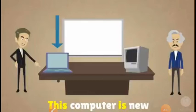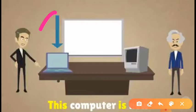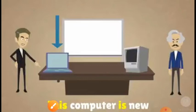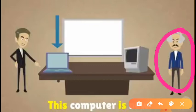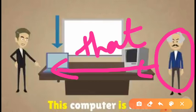'This computer is new' — it is close to the speaker. If we say about a computer that is far from the speaker, we say 'that computer is old,' because it is far from the speaker. If this person is speaking about the computer near them, we use 'this.' If speaking about the far computer, we use 'that.' Don't confuse the two.